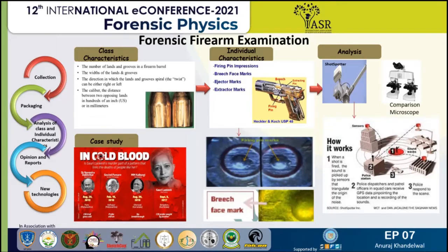Ballistic reports from the Karnataka FSL laboratory stated that Lankesh was killed with the same 7.65mm country-made gun that was used to kill Kannada scholar M.M. Kalburgi in Dharwad, Karnataka, in August 2015. Also, forensic analysis conducted by Karnataka FSL comparing bullets and cartridges in the Kalburgi case with those recovered from the shooting of leftist thinker Govind Pansare and his wife on 16th February 2015 in Kolhapur showed that one of two 7.65mm country-made guns was used in both cases. The ballistic reports also said that the second 7.65mm gun used in the Pansare murder was also used to kill rationalist Narendra Dabholkar in Pune in August 2013.